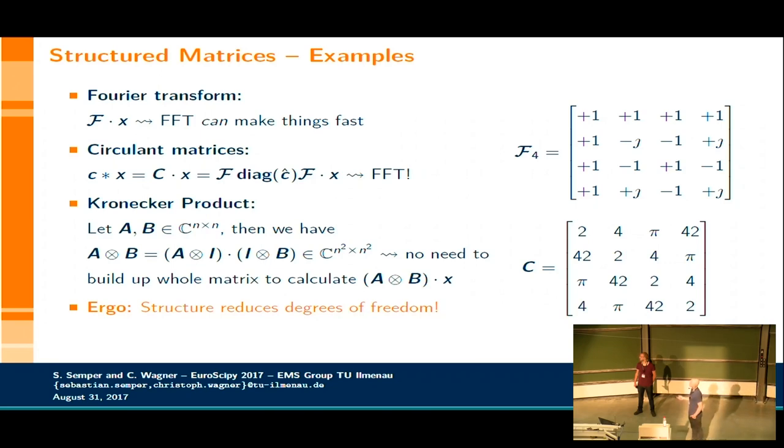Another example is a Kronecker product. It often occurs when you're dealing with multidimensional data. And you have two matrices. And if you do the Kronecker product of them, then the whole thing just explodes when it comes to dimensions. But what you know is that these two matrices build up the Kronecker product. So what you could do is, instead of building up the product, you just remember that this is a Kronecker product of these two matrices. And the take-home message here is basically that structure reduces the degrees of freedom in a linear transformation. And this is something we exploit, for example, in the FFT.